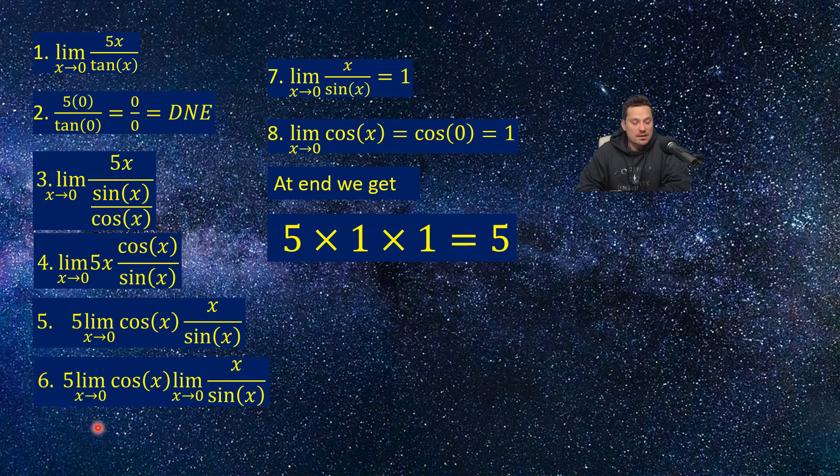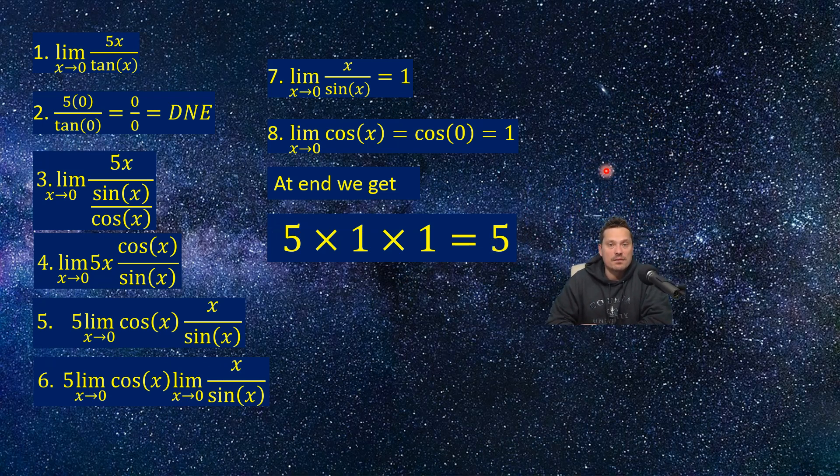The limit as x approaches 0 of cosine x, that's 1. And the limit as x approaches 0 of x over sine x, that's also equal to 1. So just multiply all of these values together and you get a value of 5. And that then becomes the value of the limit.